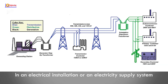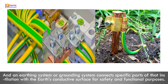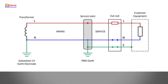In an electrical installation or an electricity supply system, an earthing system or grounding system connects specific parts of that installation with the earth's conductive surface for safety and functional purposes.